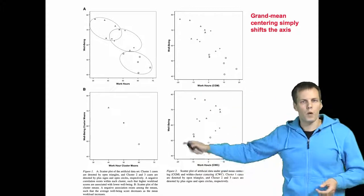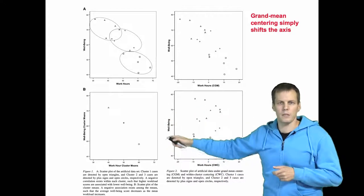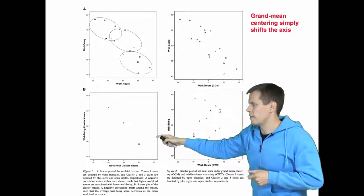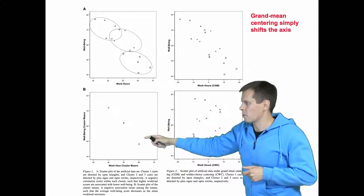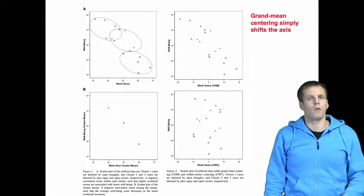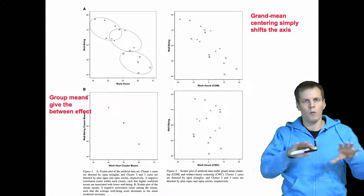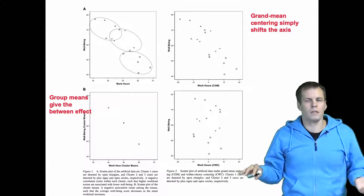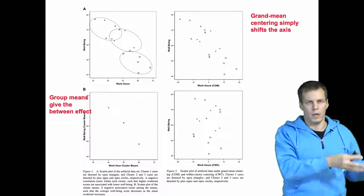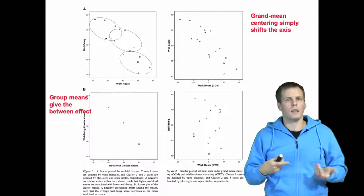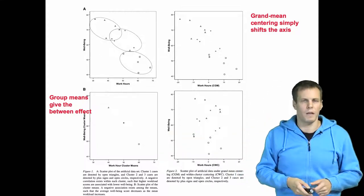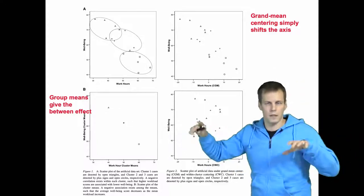What do the cluster means do? The cluster mean is the mean value of each cluster's work hour observations, and the Y value is the mean of that cluster's well-being values. Running regression on these cluster mean data gives us the between effects — how the average work hours of a cluster explain the average well-being of a cluster, i.e., how the clusters differ from each other. Taking a cluster mean of a dependent variable is useful for estimating these between-group differences.